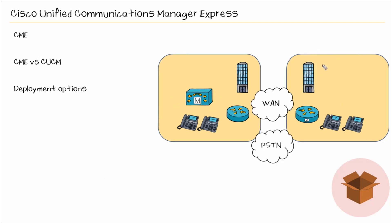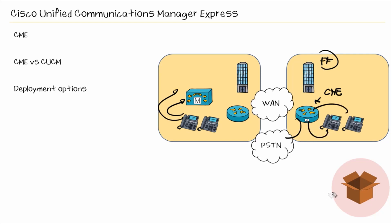Back to the fire station example — you could have the bulk of your users at the main site connect to CUCM and have call processing there. Each fire station could have a router with CME, and this router has connectivity to the PSTN or ITSP. The phones local to that fire station register to Call Manager Express on that router. The WAN connection would only be used when a phone at the fire station wants to contact a phone at the main site.